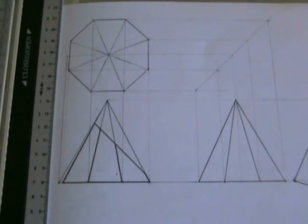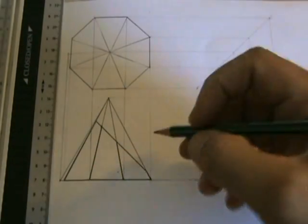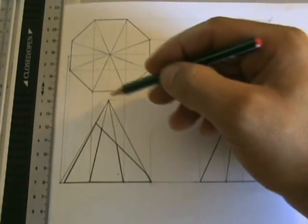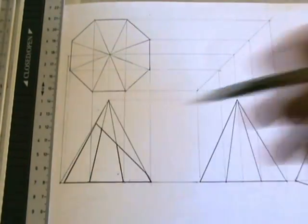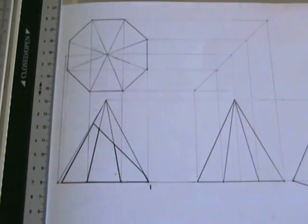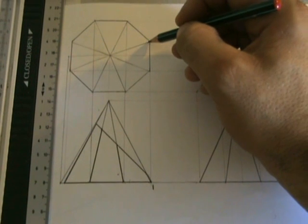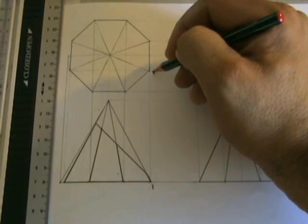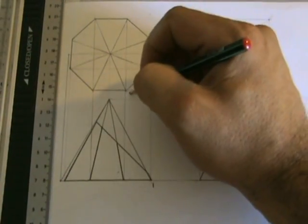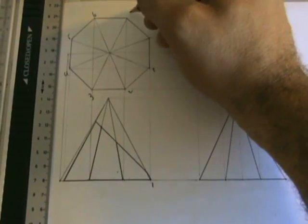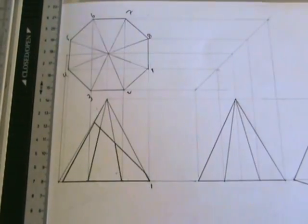Now the first thing you do after you truncate is you start numbering. So this part here is the shortest side of the new pyramid, of the truncated pyramid. So I'm going to give that number one. That could be either this side or this side for number one. I'm going to choose this as my first number and then just go around numbering each corner of the plan.